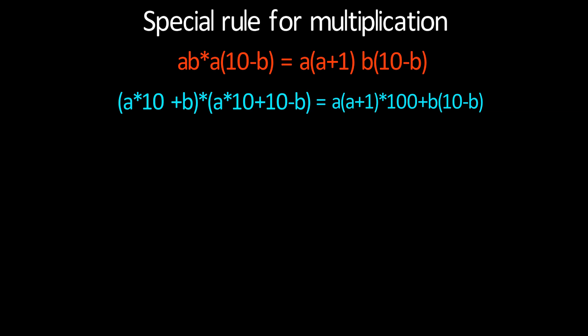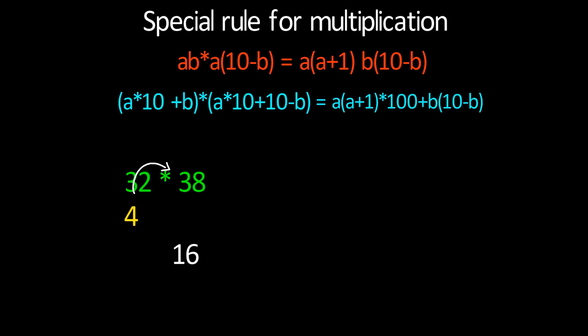Let's take an example: 32 times 38. The first digit of both numbers is the same, and 10 minus 2 gives 8. We multiply 8 with 2 to get 16. Now increase 3 by 1 to get 4, and 4 times 3 is 12. So our answer is 1216.